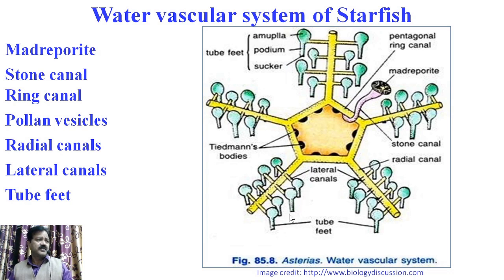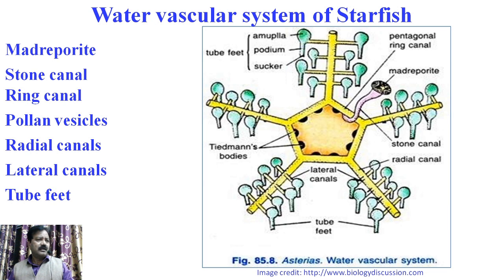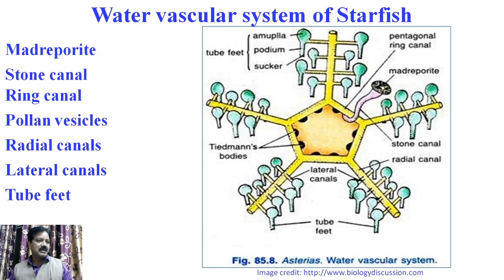In case of the tube feet, these are thin-walled elastic projections present on the oral side. Each tube foot consists of two parts: the ampulla and the podium. The ampulla is a water-filled sac with a muscular wall. The podium is a muscular tube-like structure that comes out of the body, and the podium ends with a sucker. The tube feet are mainly used for locomotion and respiration. The functions of the water vascular system include attachment, locomotion, food and waste transportation, respiration, and food collection.